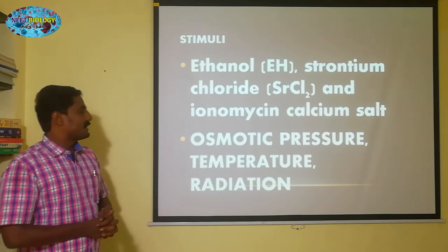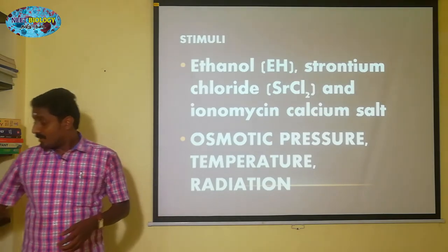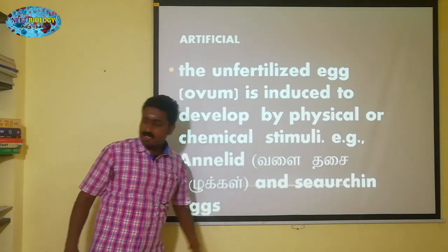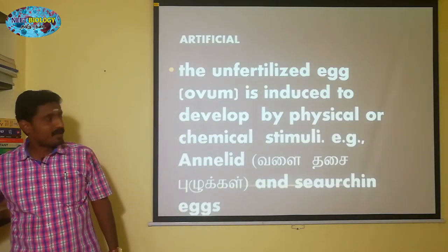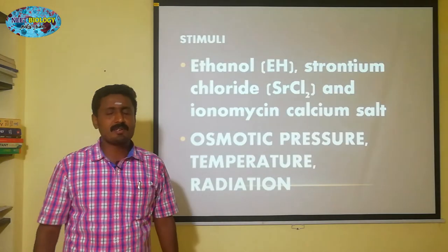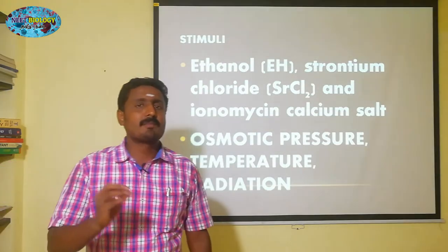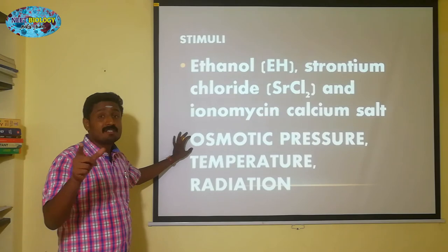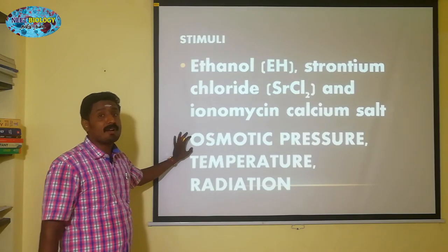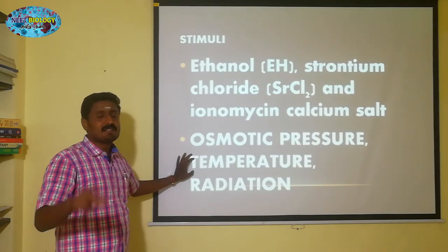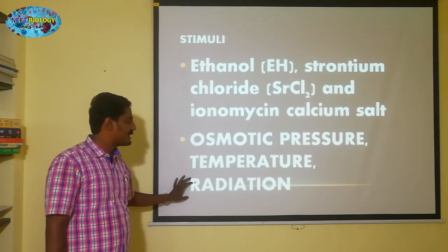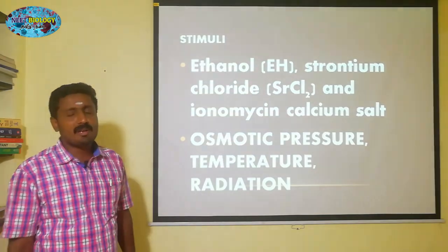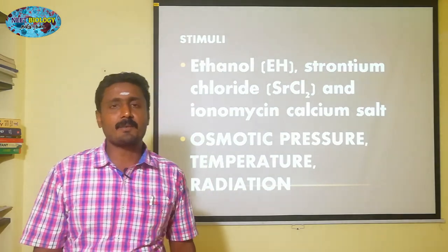Physical conditions include osmotic pressure and temperature. The sea urchin, which belongs to the Echinodermata, is a classic example. If we can induce parthenogenesis, osmotic pressure variation can be used. We can also use temperature and radiation as physical stimuli.